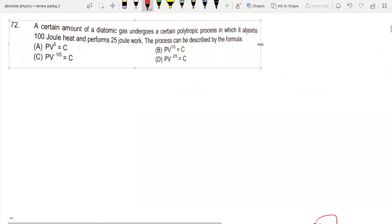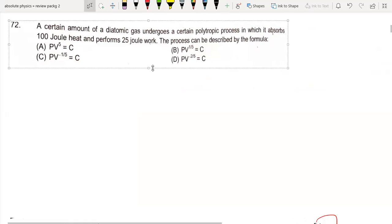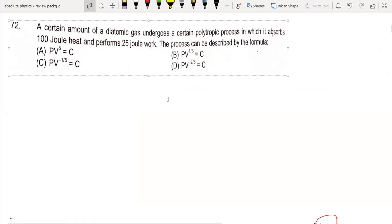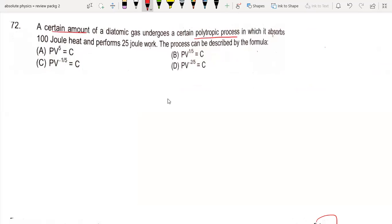Hi everyone, in this lecture we are going to solve this question of thermodynamics. This is a question of polytropic process. A certain amount of diatomic gas undergoes a certain polytropic process in which it absorbs 100 joule heat and performs 25 joule of work and expands.